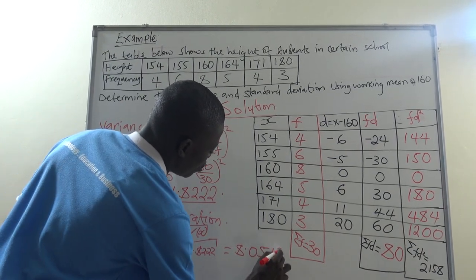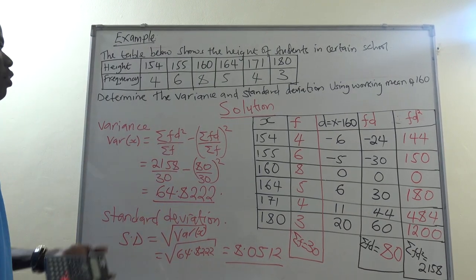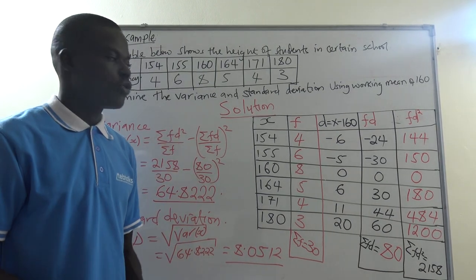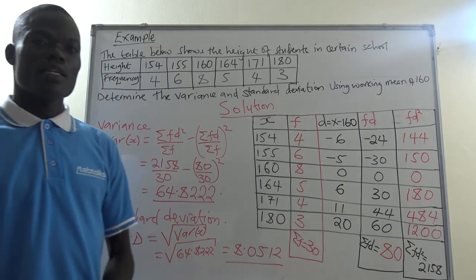8.0512. That's the value of standard deviation. So that's how we calculate this. Thank you.